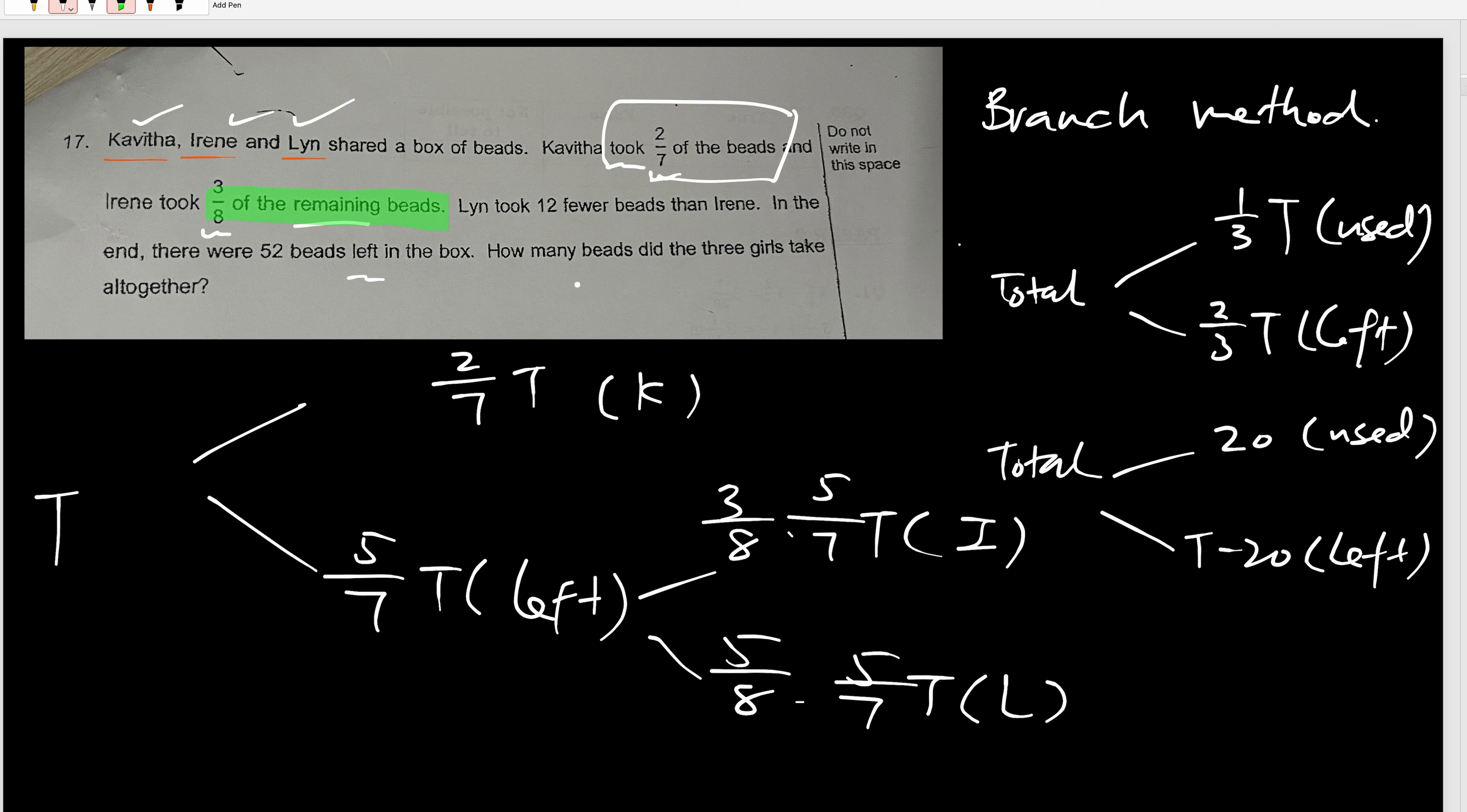And now, the question says Lin took 12 fewer than Irene. So which one minus which one is 12? Lin took 12 fewer, so that means Irene minus Lin equals 12. This is Irene, this one is Lin. So you should take Irene minus Lin equals 12. But before you do that, use a calculator to simplify this for me. 3 times 5 is 15, 8 times 7 is 56, so that is Irene. What is Lin? 5 times 5 is 25, 8 times 7 is 56T. So therefore, this is Lin.